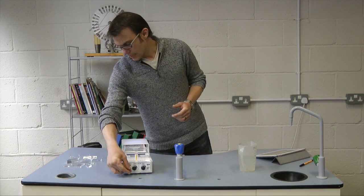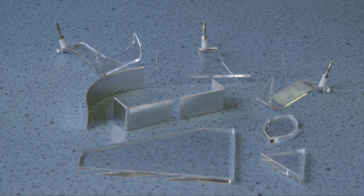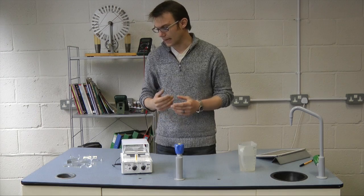The Ripple Tank ships complete with a set of shapes for refraction work, some reflectors for doing reflection and diffraction, and three different dippers.